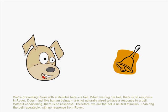We're presenting Rover with a stimulus here, a bell. When we ring the bell, there's no response in Rover. That's because dogs, just like human beings, are not naturally wired to have a response to a bell. Without conditioning, there is no response. Therefore, we call the bell a neutral stimulus. I can ring the bell repeatedly with no response from Rover.